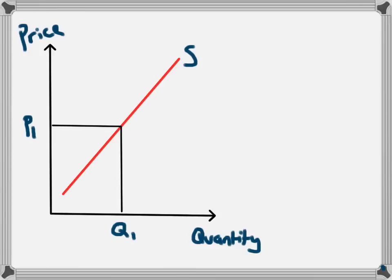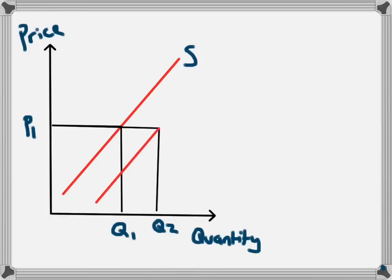For example, if the cost of factors of production fell, the business would be able to make more of this product at the same price, because they'll be making more profit on each unit. So now at this price level, instead of supplying Q1, the business will now supply Q2. This will occur all along the price range, and you will end up with a supply curve shifting to the right, from S1 to S2.